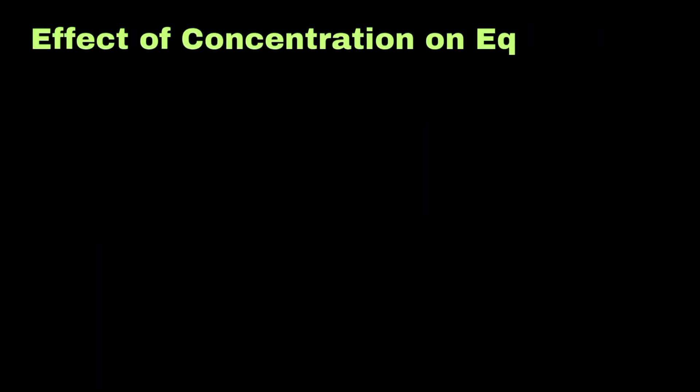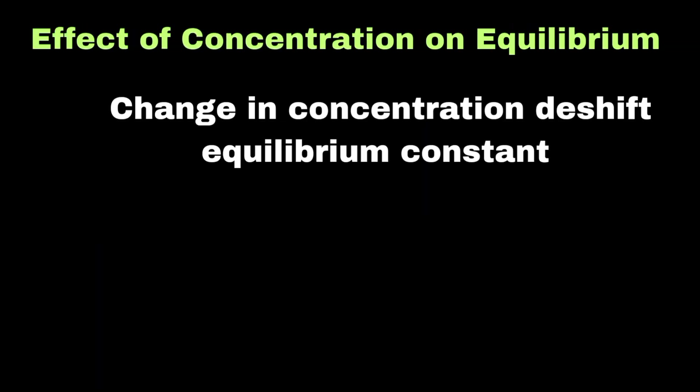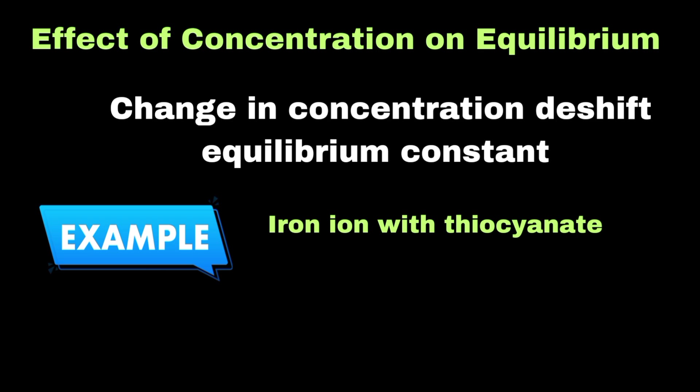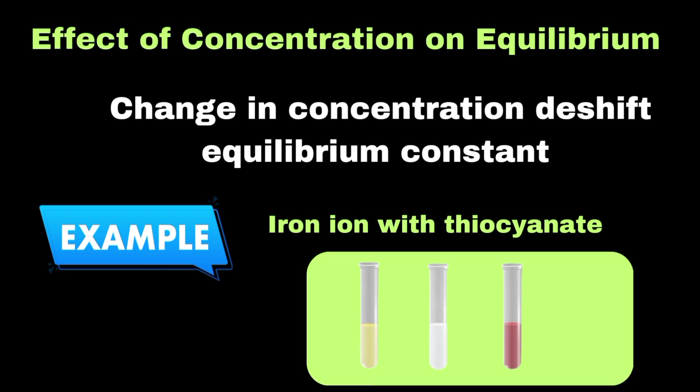Now we can explore concentration effects on equilibrium. Changes in concentration of any component will cause the system to shift to restore equilibrium. Let's look at the reaction of iron ions with thiocyanate ions to form the blood-red iron-thiocyanate complex. If we add more iron ions, the solution becomes darker red as the equilibrium shifts to form more product, counteracting the added reactant.